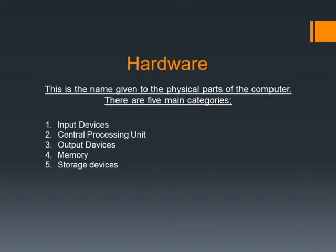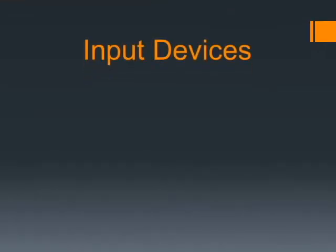You should remember that there are five main categories of hardware. From our previous video, you know that hardware is the physical component of the computer — the one you can touch. The five main components are: input devices, central processing unit, output devices, memory, and storage.